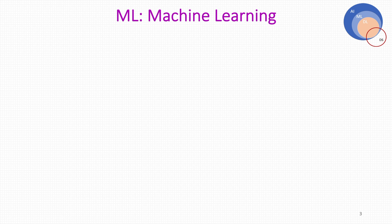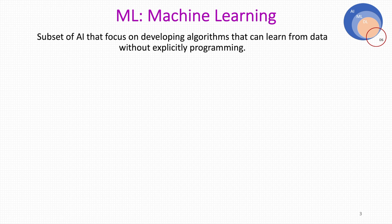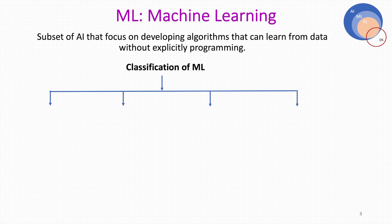As we saw earlier, machine learning is a subset of artificial intelligence that is focused on developing algorithms that can learn from data without explicitly programming. Here, explicitly programming means we don't have to program it for every single task. These ML algorithms can also take decisions for data outside the training dataset.